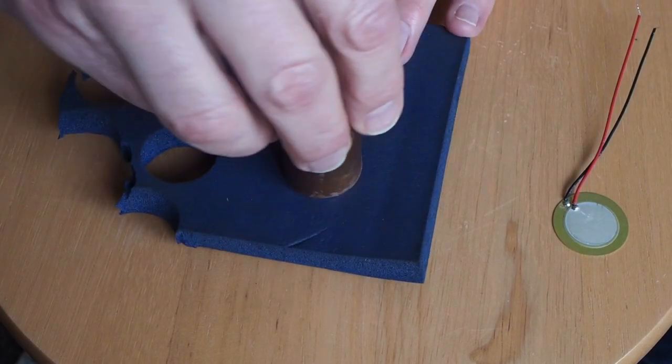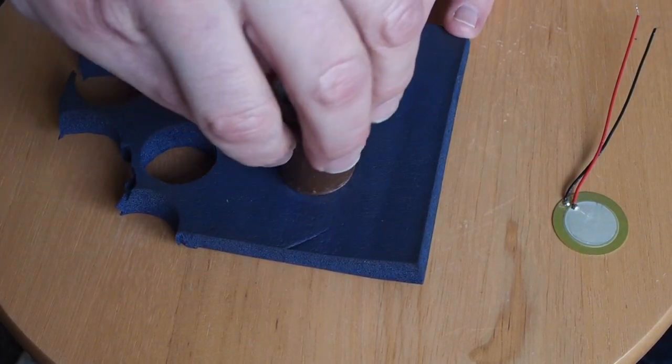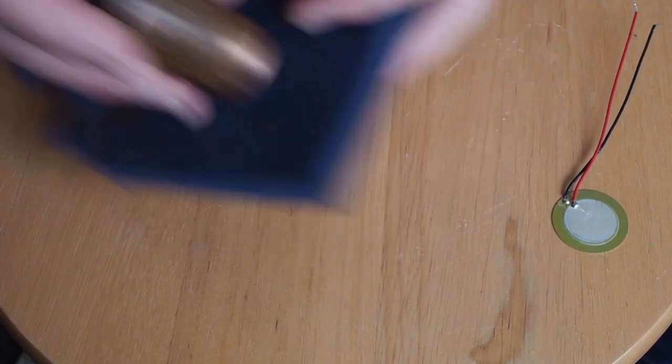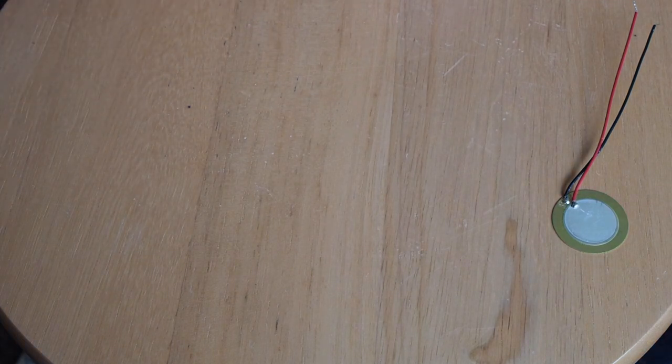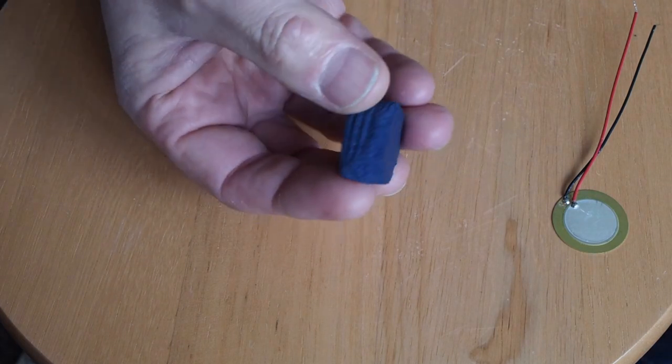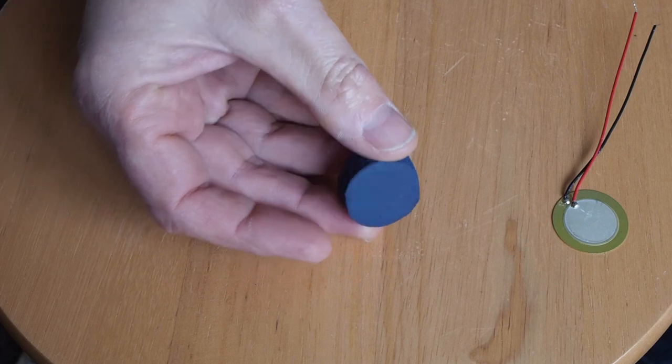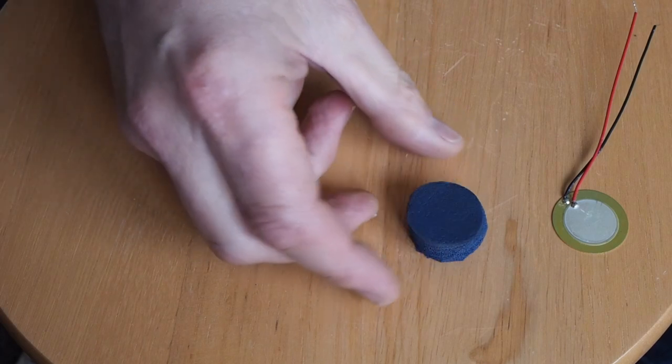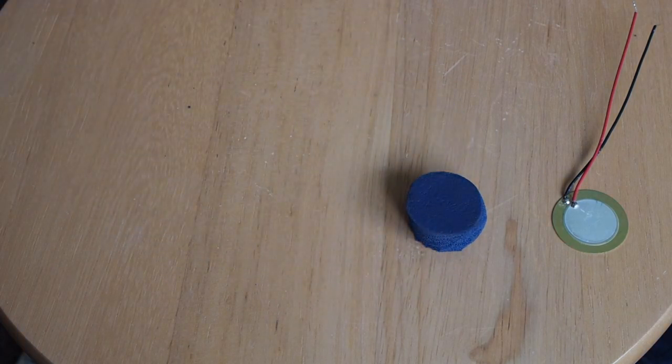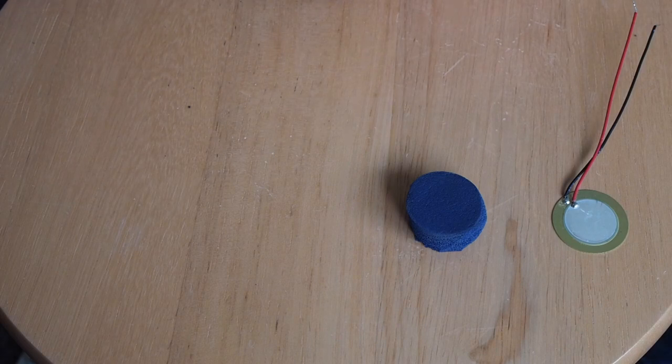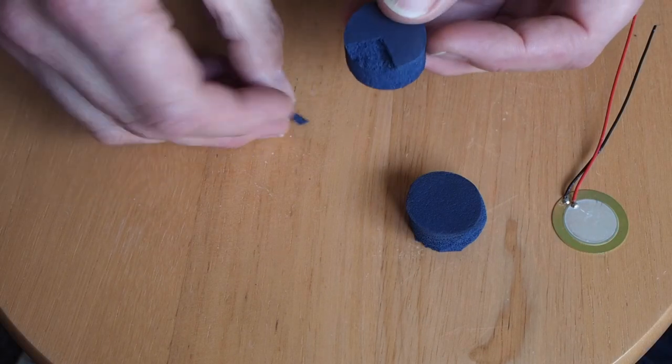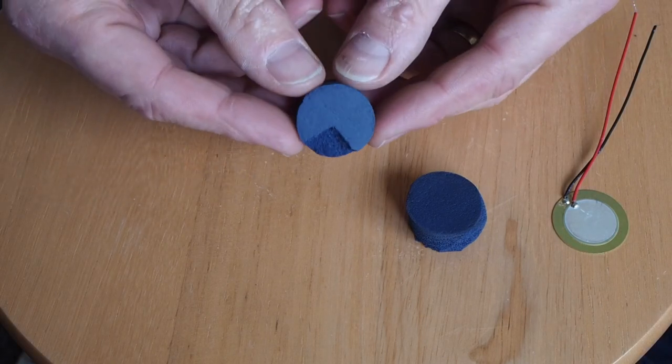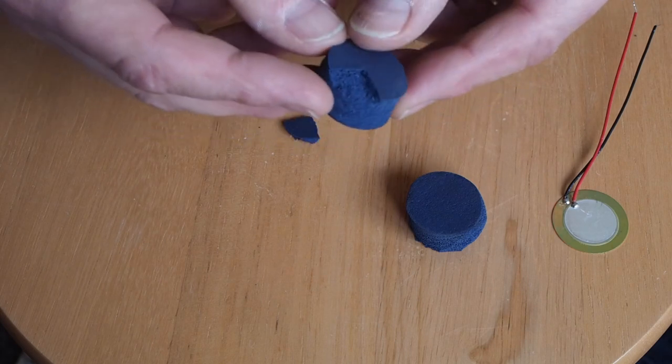What you need is a disk of foam about the same size as the piezo. So I've got a bit of copper piping here which I've sharpened on the edge with a file, and with a little bit of pressure and rotation it's fairly easy to end up with a disk of foam which looks something similar to this. It doesn't have to be perfect.